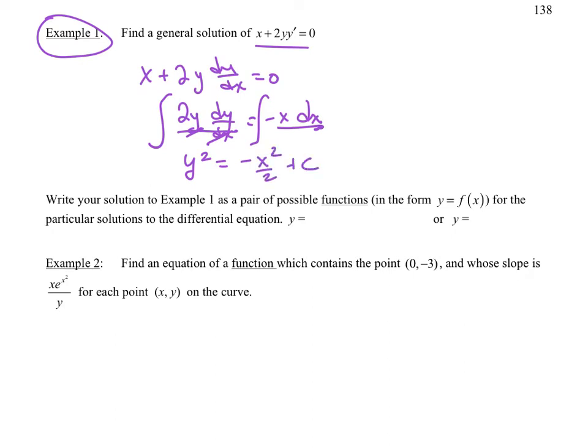So I separated the variables right here and then I took the antiderivatives of both sides and then I put plus c. Now my last step is to solve for y probably. And so y is equal to plus or minus the square root of -x²/2 + c.